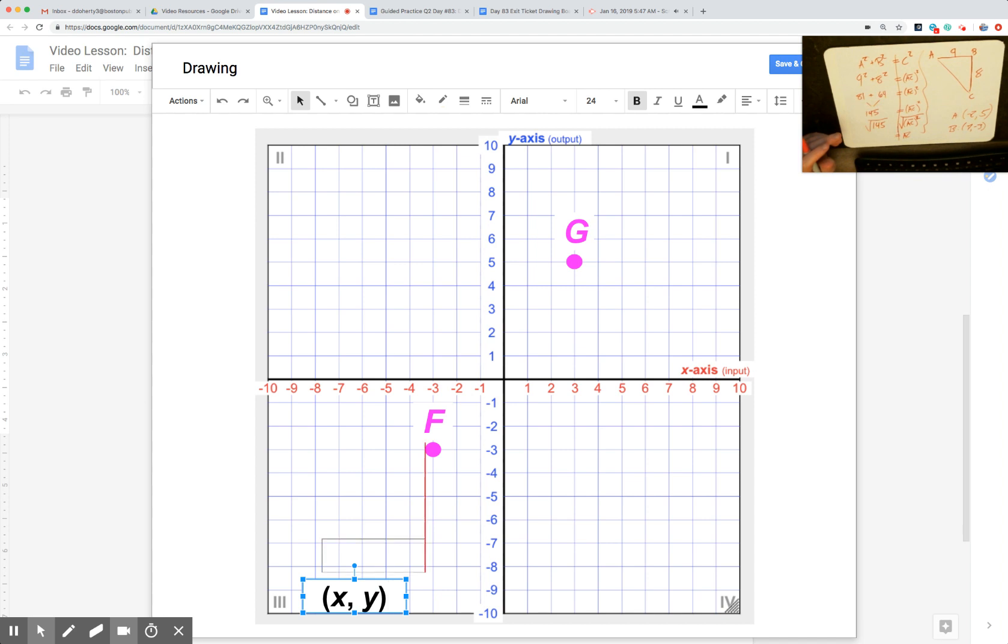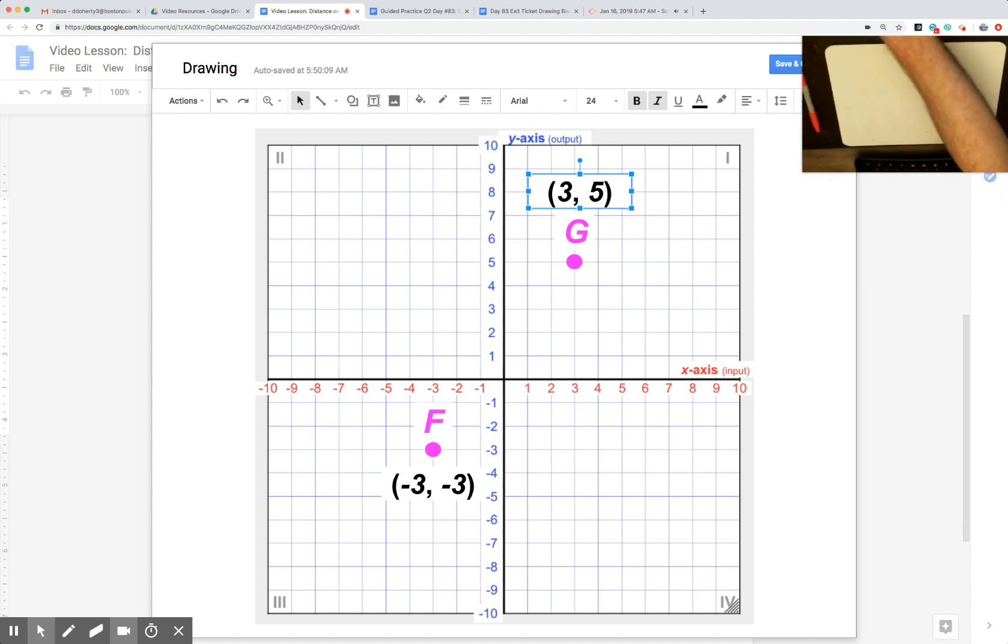Hopefully you saw that F is going to be (-3, -3). It lines up with the -3 on the X and the -3 on the Y. And then we take a look at coordinate G or point G. The coordinates for point G: 3 to the right, so that's a positive 3—that's where it lines up with on the x-axis—and positive 5 for Y.